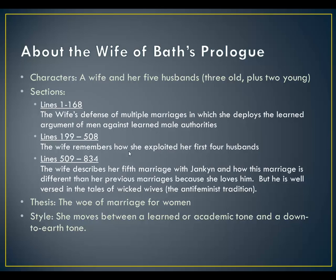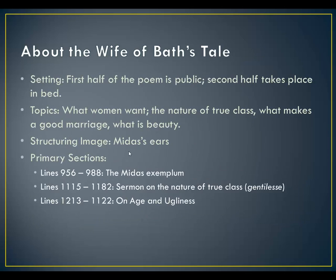The style is that she's moving in this prologue between an academic tone and a down-to-earth tone — she's using both. That's important because she couldn't really own an academic tone if Chaucer's writing her correctly, since she couldn't have gotten a university education. In her tale, the first half of the poem is public, and the second half takes place while she's in bed. The topics are what women want, the nature of true class or gentleness, and what makes a good marriage and what is beauty.